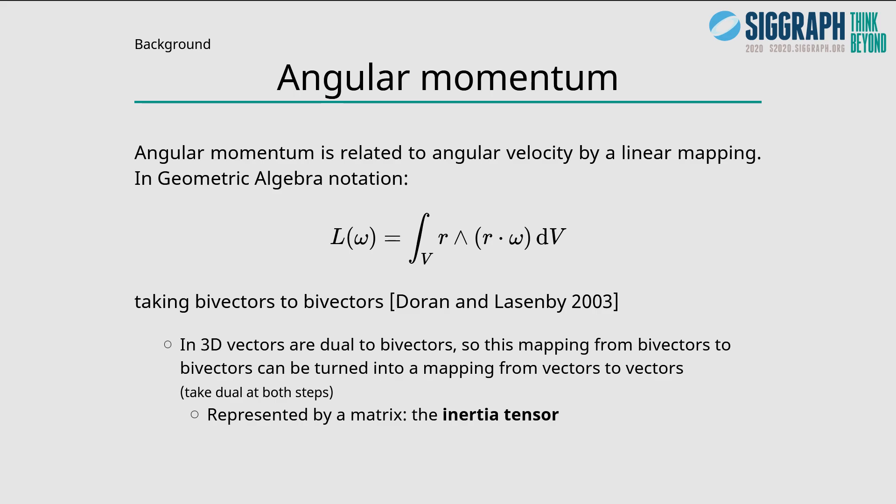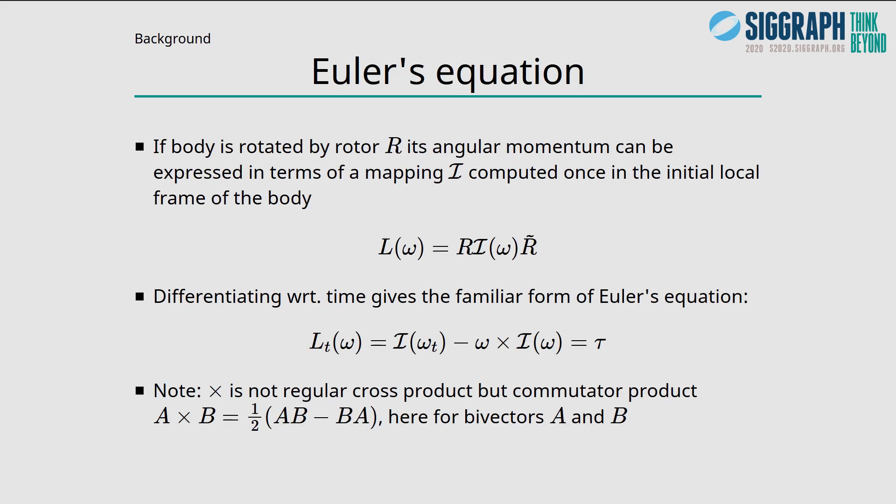In 3D, vectors are dual to bivectors, so this mapping from bivectors to bivectors can be turned into a mapping from vectors to vectors by taking the dual on both steps. This mapping is traditionally represented by a matrix, the inertia tensor. Euler's equation can also be defined in geometric algebra notation, and it takes a familiar form, but here the cross symbol is not the regular cross product but the commutator product.